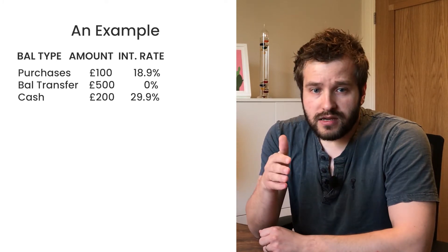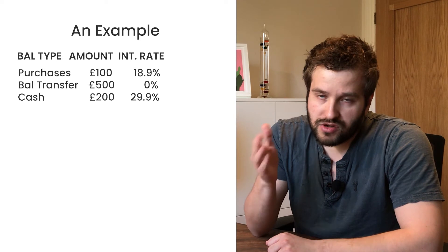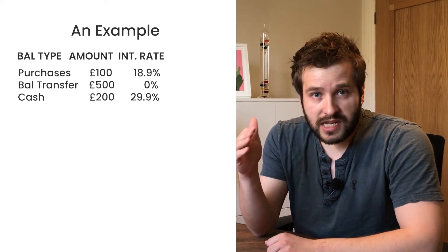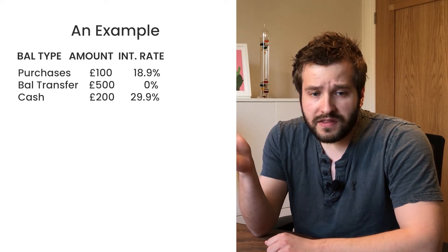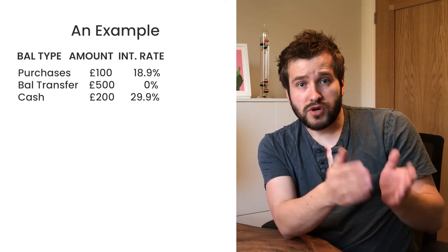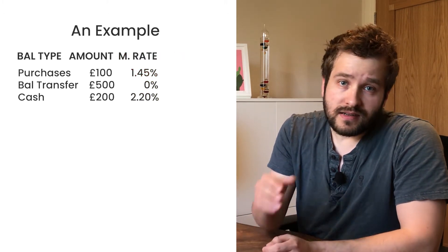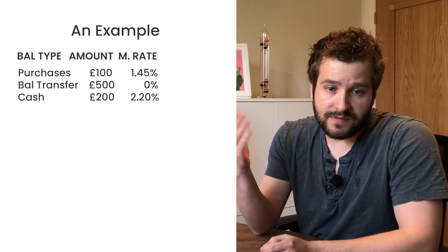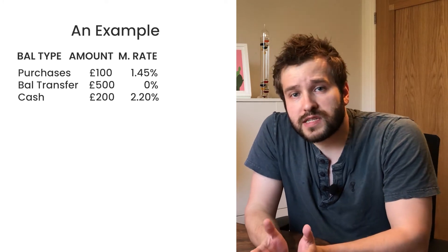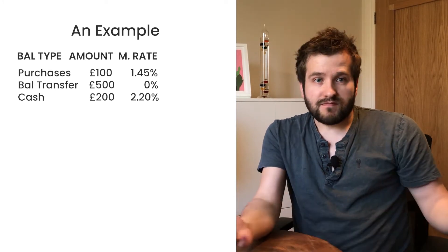If you were in the UK, you'd figure out the monthly interest rates by doing 1 + 18.9% (or 1 + 29.9%), taken to the power of 1/12. The answers in the UK are 1.45% for purchases and 2.20% for cash. In the US, you divide by 365 and multiply by 30, giving you 1.55% for purchases and 2.46% for cash.